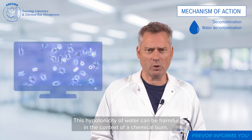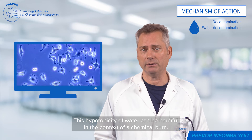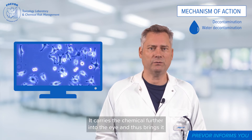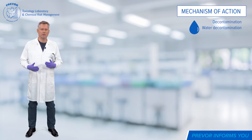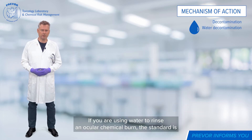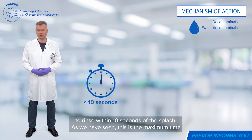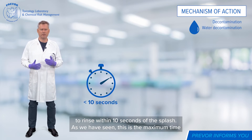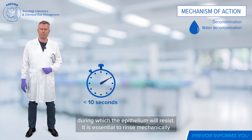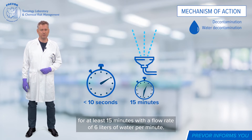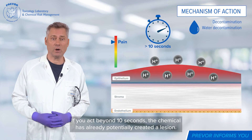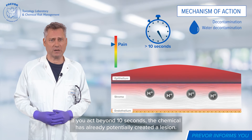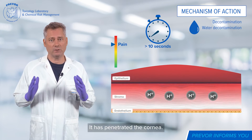This hypotonicity of water can be harmful in the context of a chemical burn. It carries the chemical further into the eye and thus brings it dangerously close to the endothelium. If you are using water to rinse an ocular chemical burn, the standard is to rinse within 10 seconds of the splash. This is the maximum time during which the epithelium will resist. It is essential to rinse mechanically for at least 15 minutes with a flow rate of 6 litres of water per minute. If you act beyond 10 seconds, the chemical has already potentially created a lesion and has penetrated the cornea.